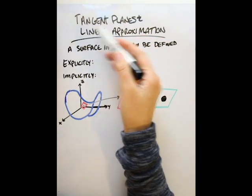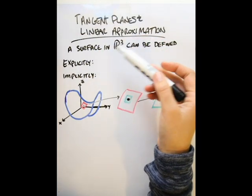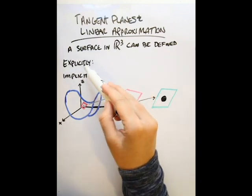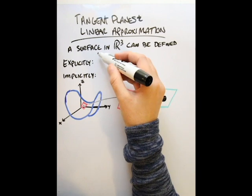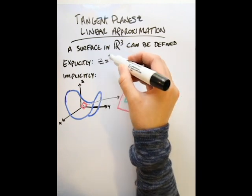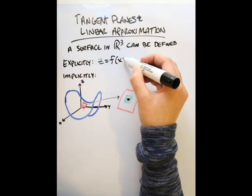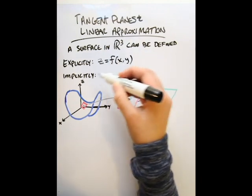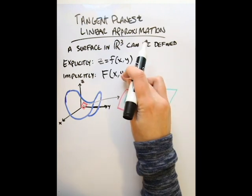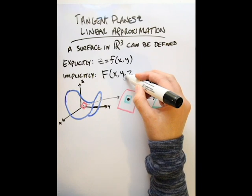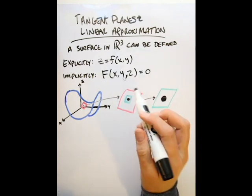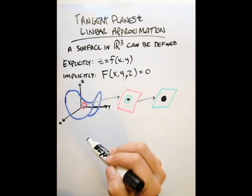In this video, we're going to talk about tangent planes and linear approximation. For tangent planes, a surface in R3 can be defined either explicitly or implicitly. An explicit description for a surface would be z equals f of xy. The implicit description would be f of xyz equals 0. When we define the equation of a tangent plane, we're going to have two different ways to define it depending on how our surface was defined.